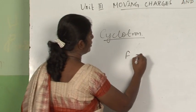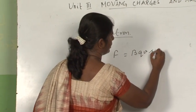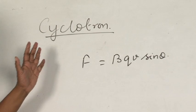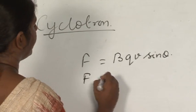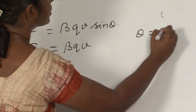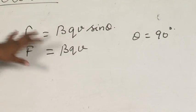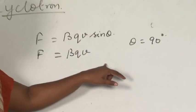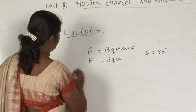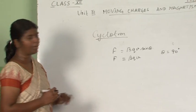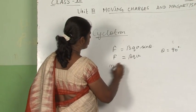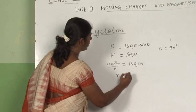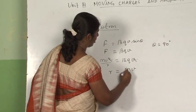F is equal to BQV sin theta. If a charged particle is moving inside a magnetic field and the field is perpendicular to the velocity, then F equals BQV with theta equal to 90 degrees. The particle moves in a circular path, so MV squared by R equals BQV, which gives R equals MV upon BQ.